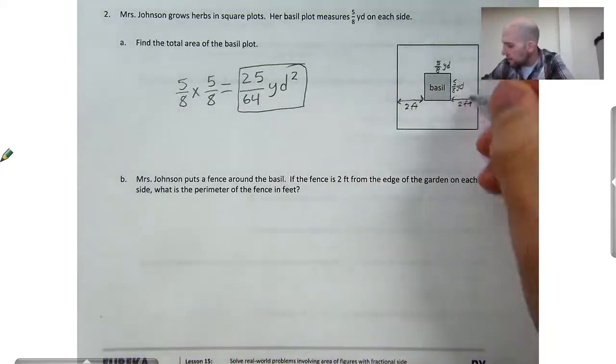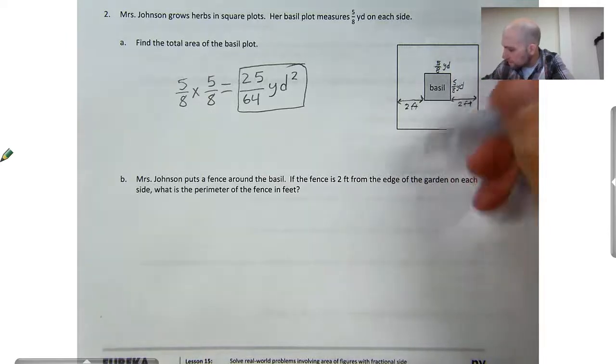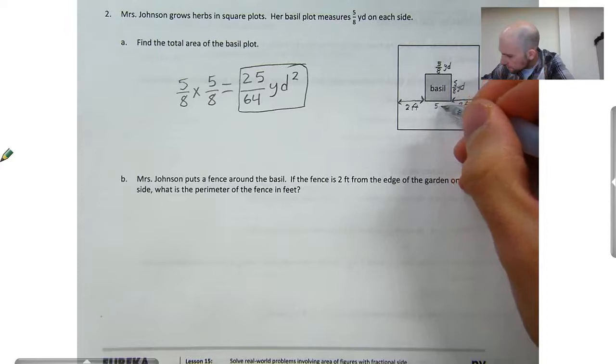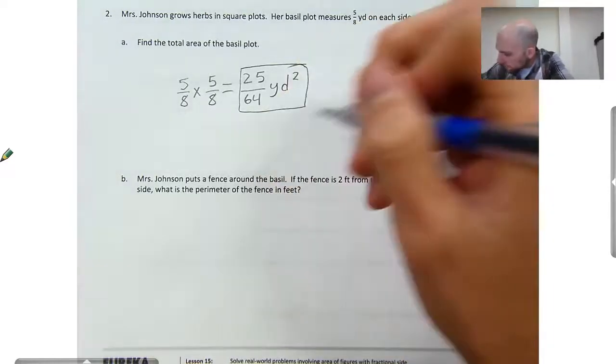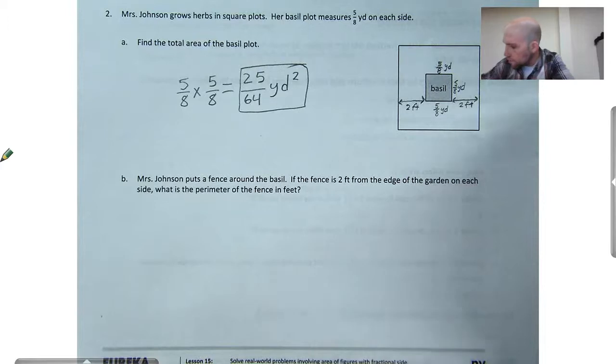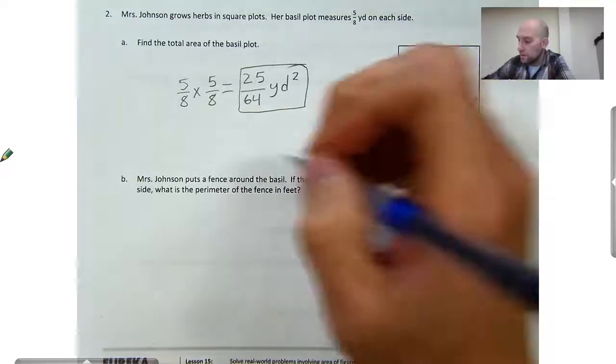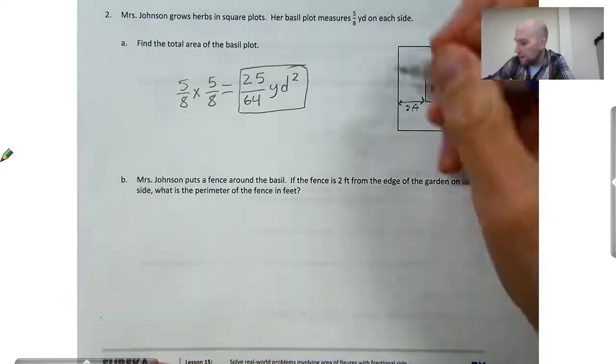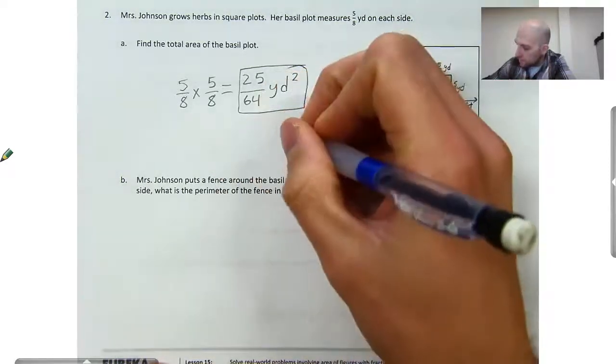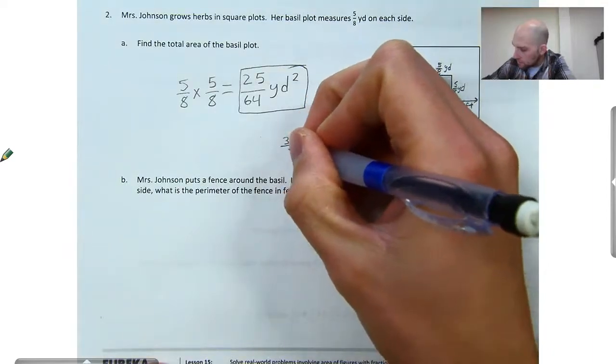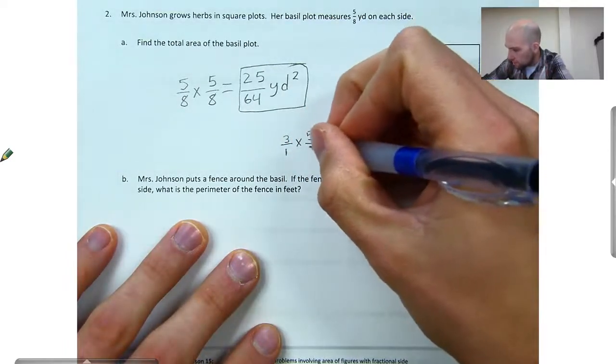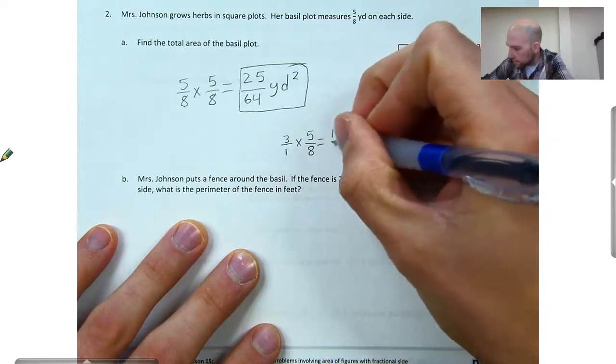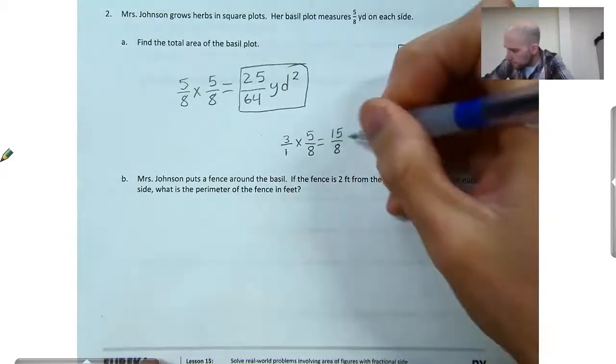So we need to find five-eighths of a yard in feet. So if one yard is three feet, we need to figure out what five-eighths of three is to figure out how many feet there is on the side of this basil plot here. So we'll do three over one times five-eighths. That'll give me 15-eighths feet.